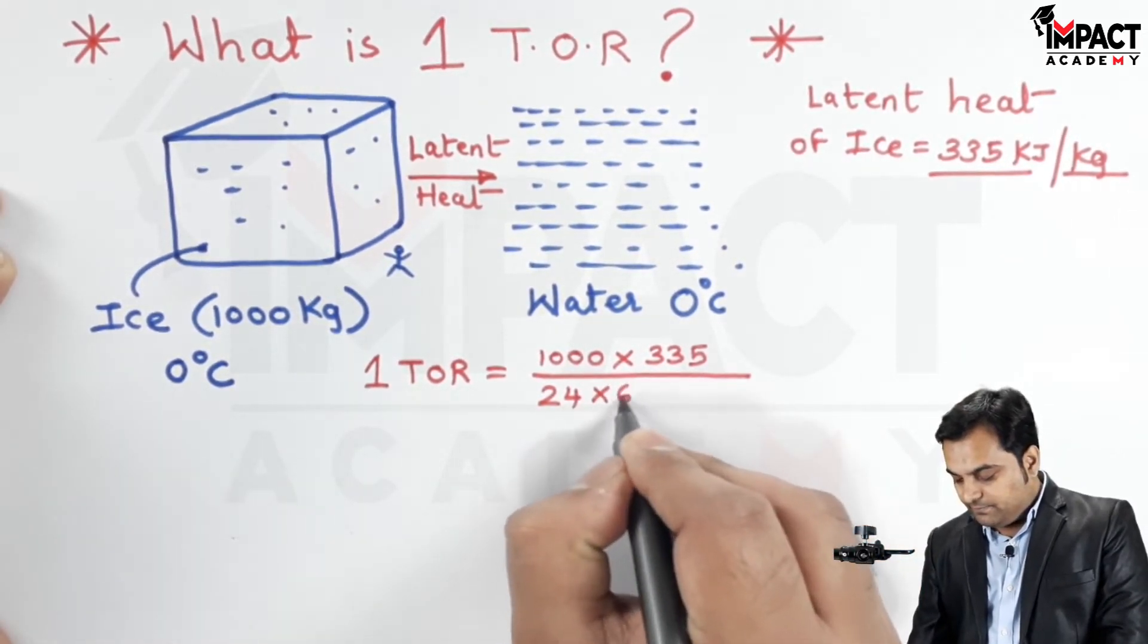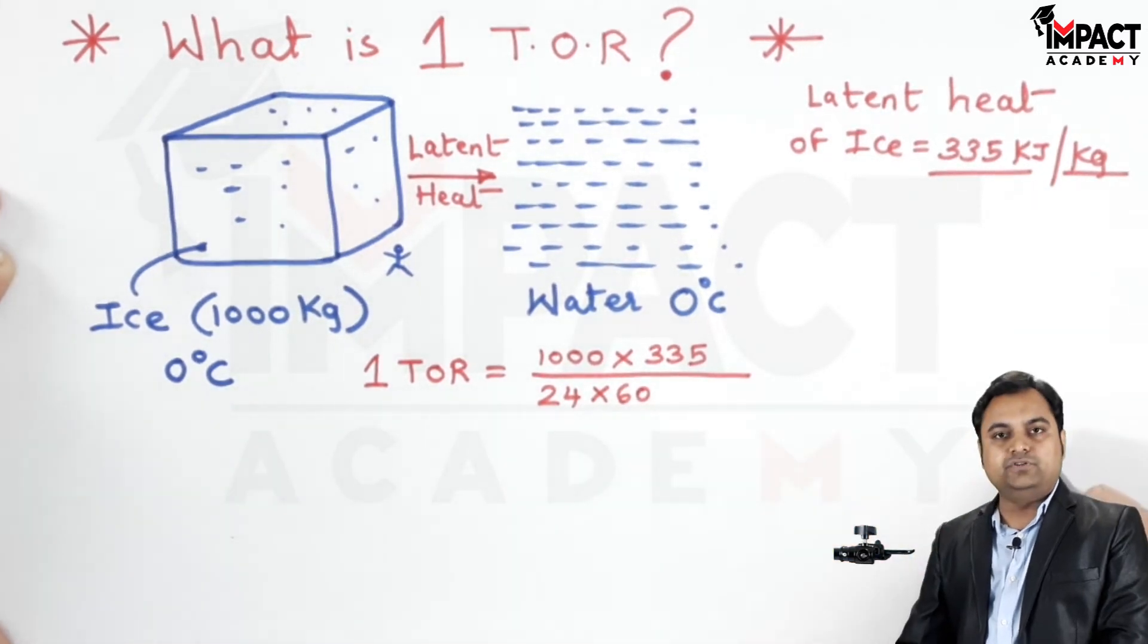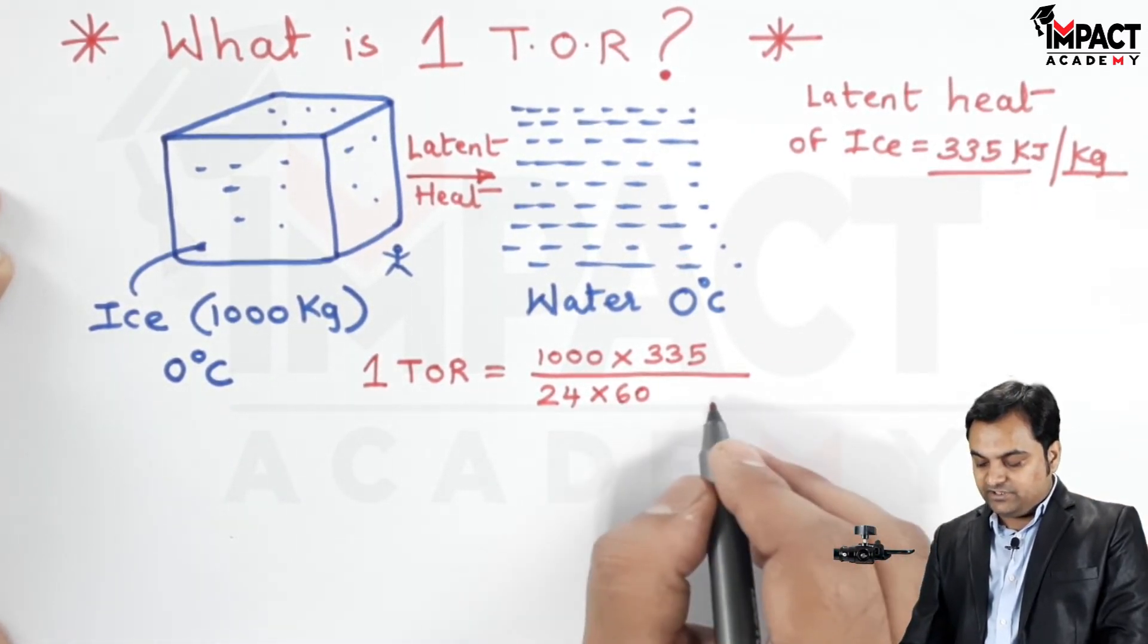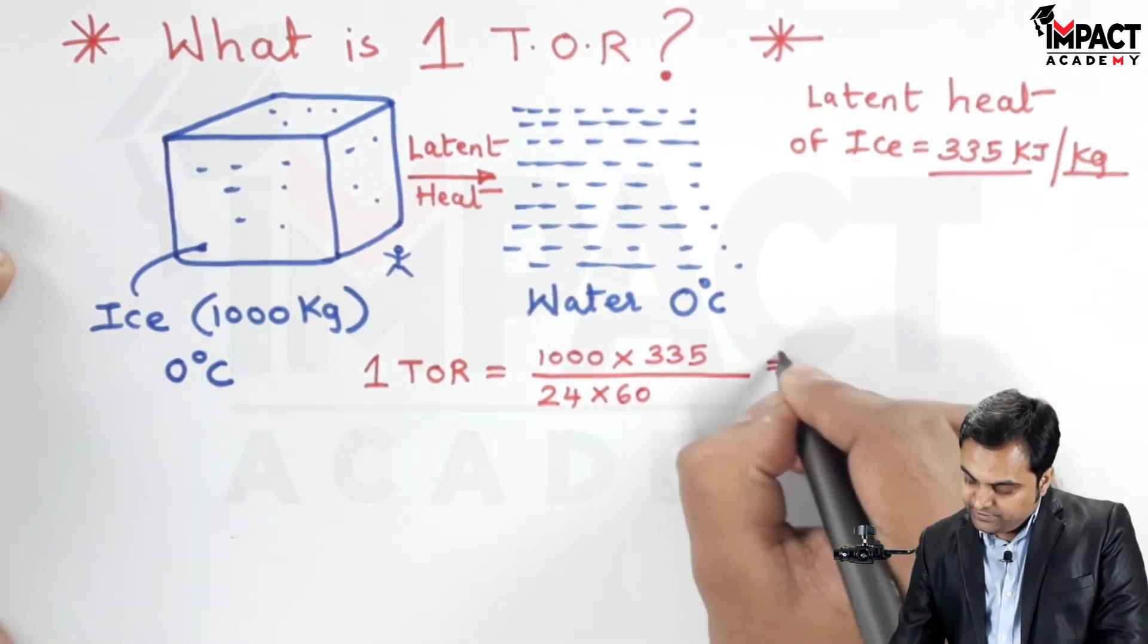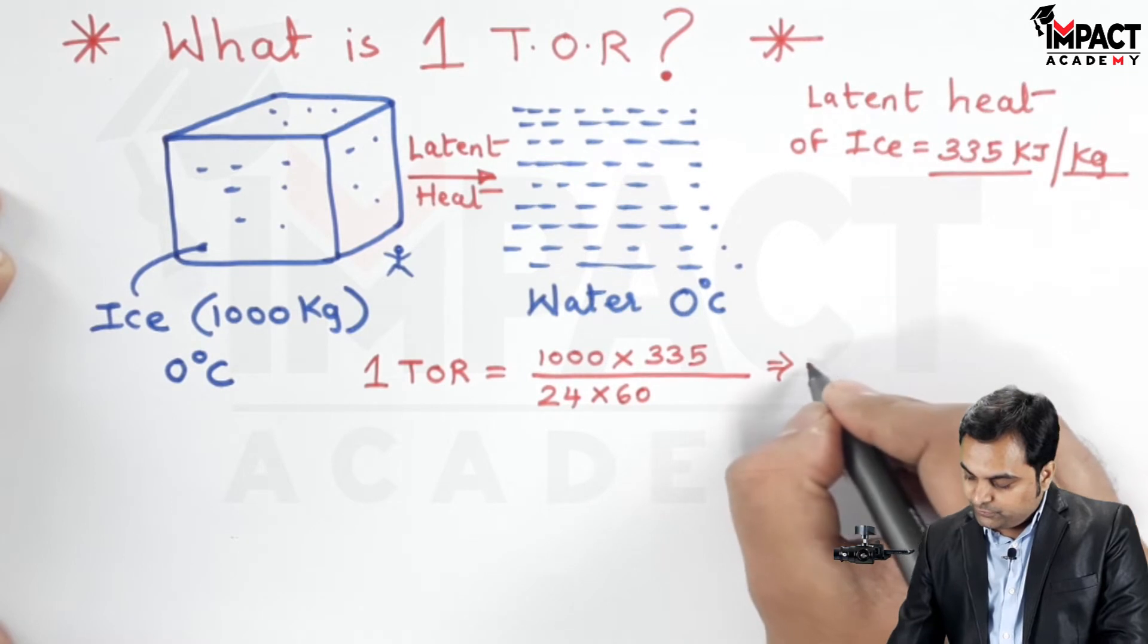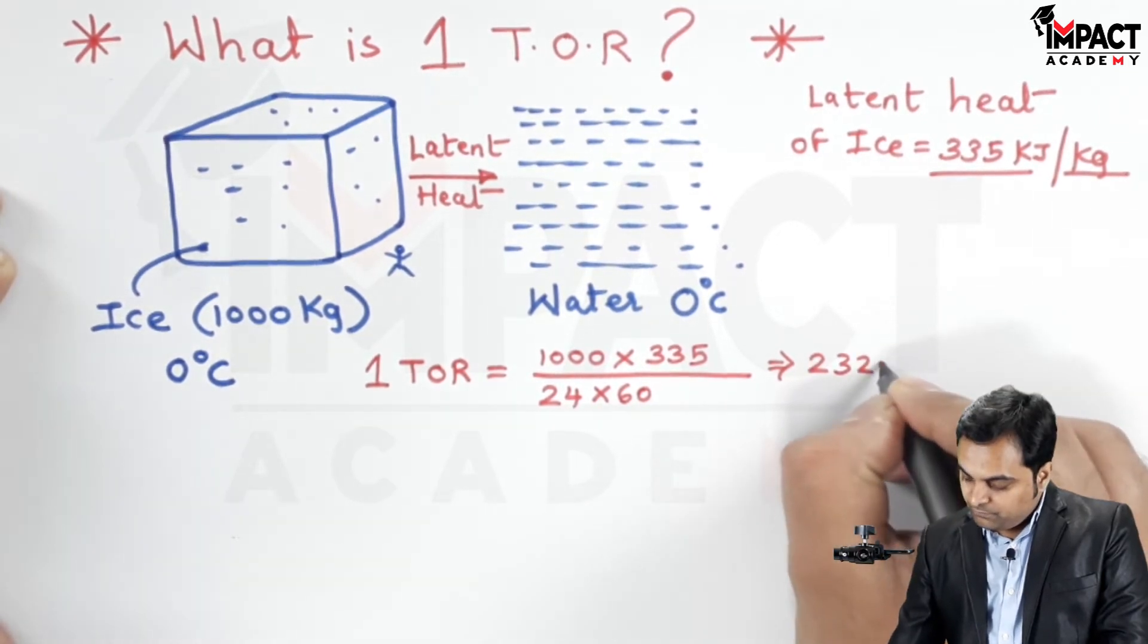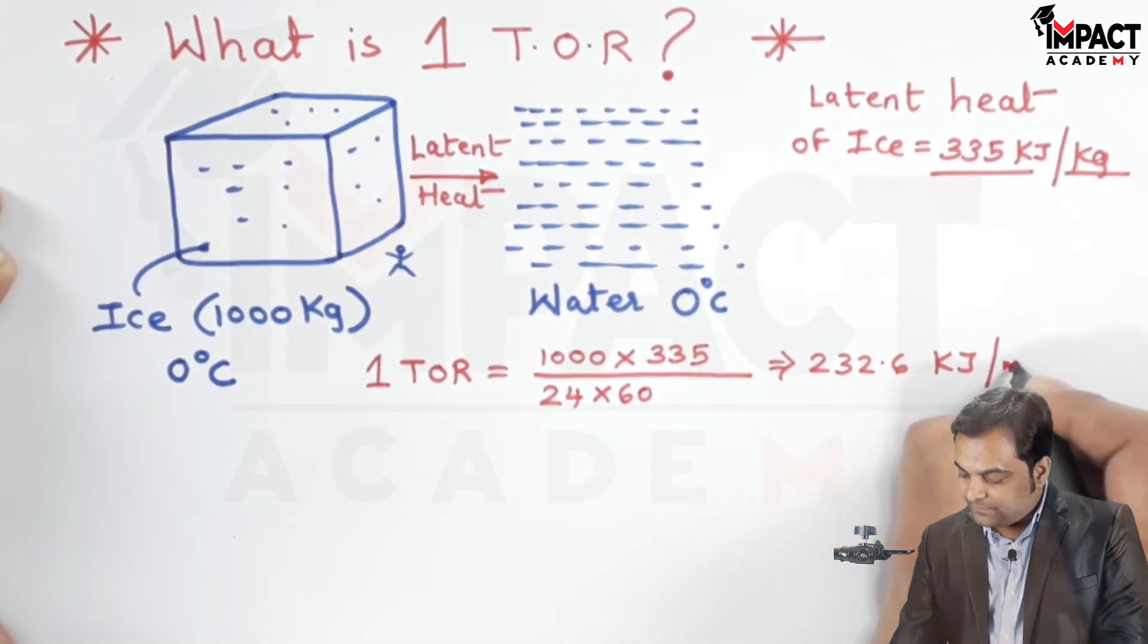Then by multiplying the denominator, if it's 60 it would give me the answer in terms of minute and that answer comes out to be it is 232.6 kilojoule per minute.